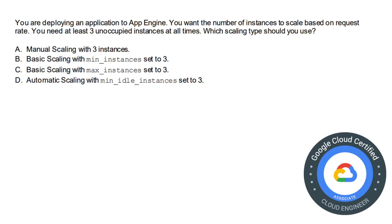Moving on to the next question. You are deploying an application to App Engine and want the number of instances to scale based on the request rate. You need at least three unoccupied instances at all times. Which scaling type should you use? The options are: manual scaling with three instances, basic scaling with minimum instances set to three, basic scaling with maximum instances set to three, and automatic scaling with minimum idle instances set to three. The correct answer is option D: automatic scaling with minimum idle instances set to three.